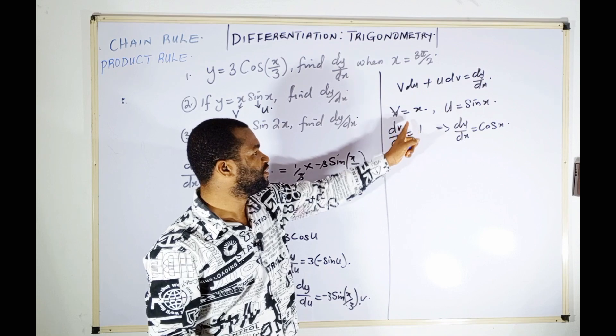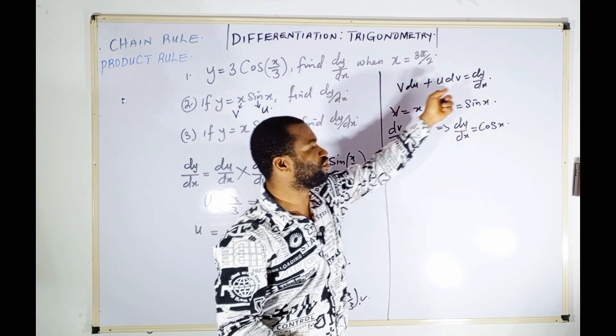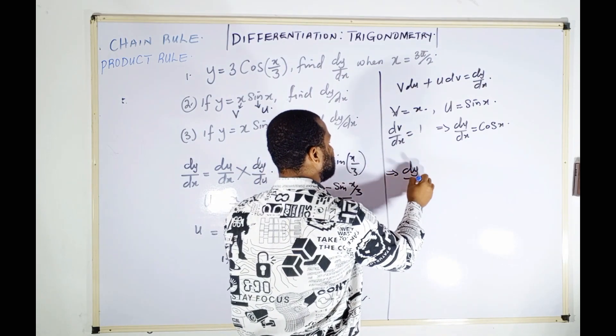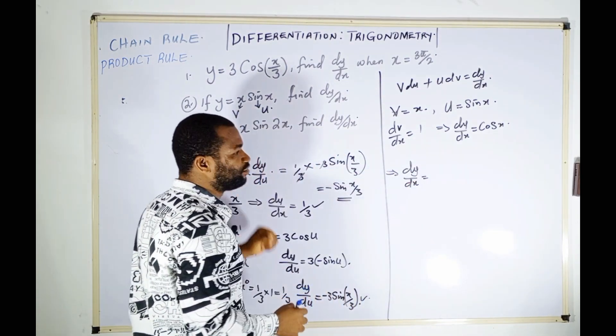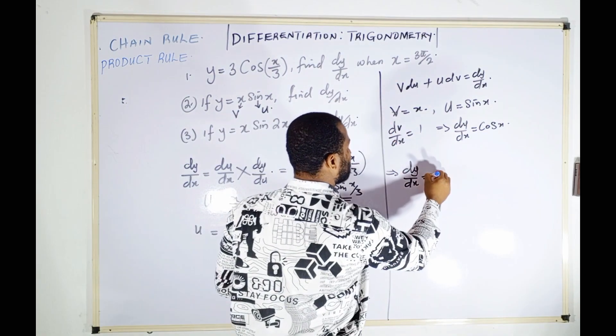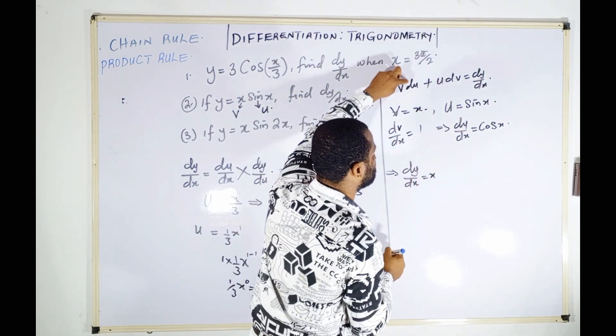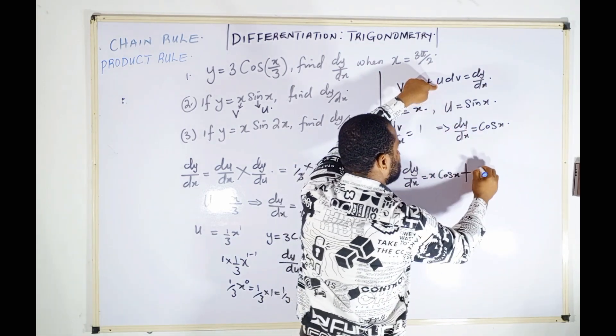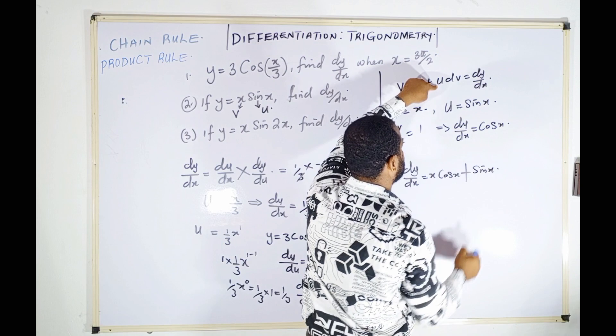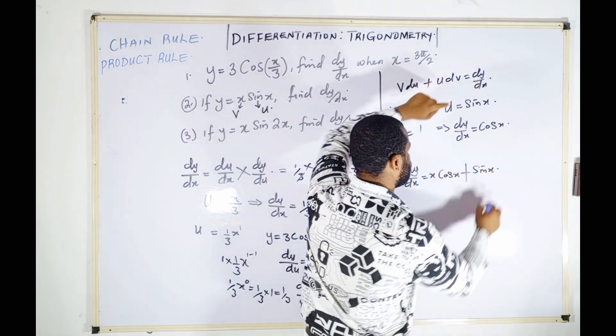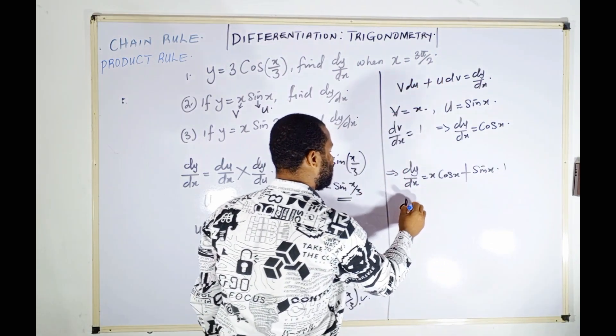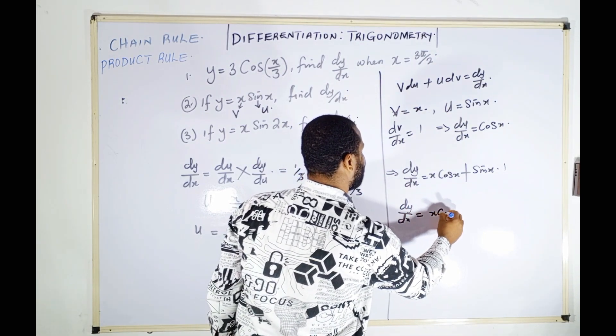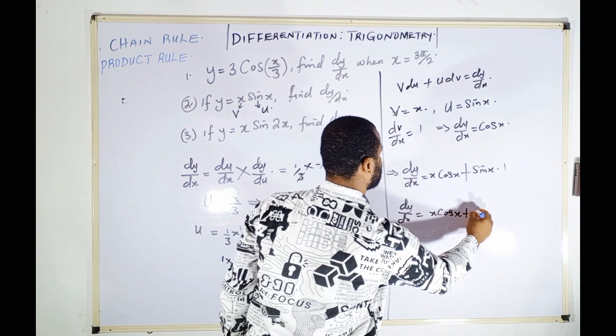Now that I have all the derivatives, substituting into the formula: dy/dx = x·cos(x) + sin(x)·1, which simplifies to x·cos(x) + sin(x). This is the answer.